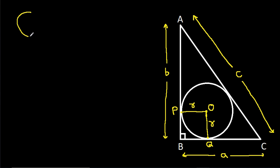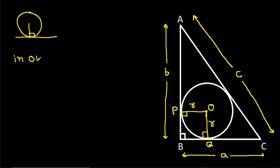Then in any circle, the radius and tangent are perpendicular to each other. So these angles will be 90 degrees, and now in quadrilateral OPBQ —